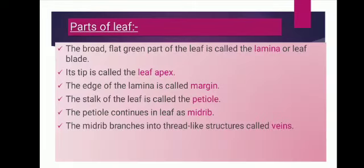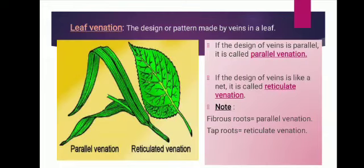The broad flat green part of the leaf is called lamina. Its tip is called the leaf apex. The edge of the lamina is called margin. The stalk of the leaf is called petiole. The petiole continues in the leaf as midrib, and the midrib branches into thread-like structures called veins. The function of veins is to transport water and minerals through the leaves.